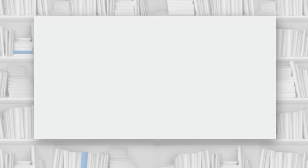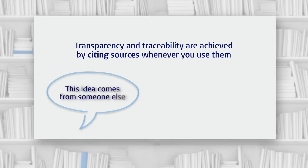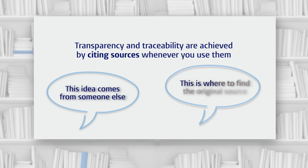So how do we make sure that we use sources in a way that is transparent and traceable? We do this by citing our sources whenever we use them in our text. When we cite, we tell our readers that we got the idea from someone else — we make it transparent — and where to find the original source — we make it traceable.